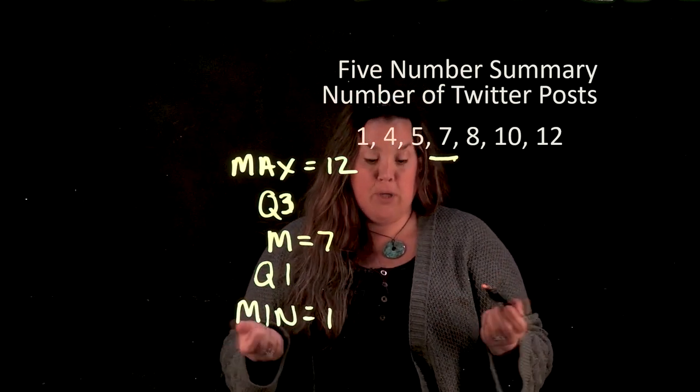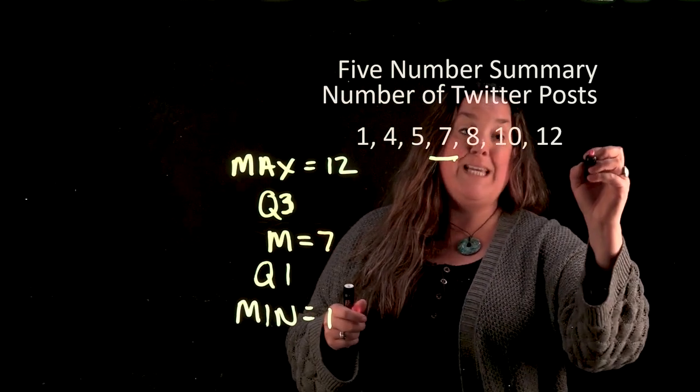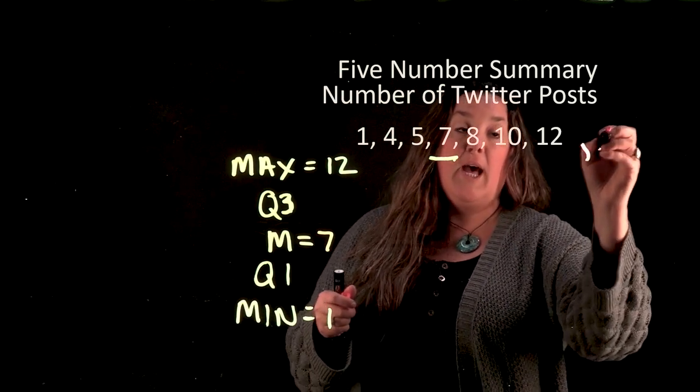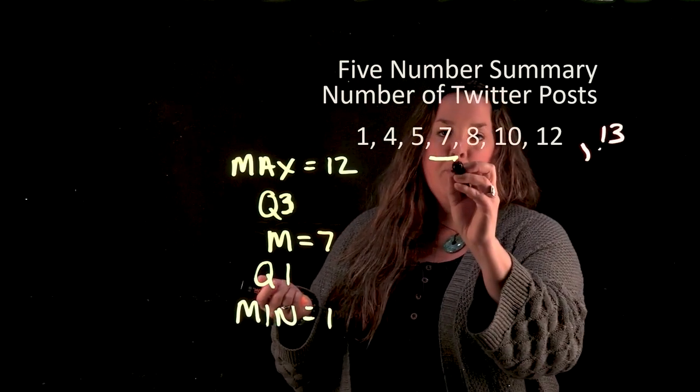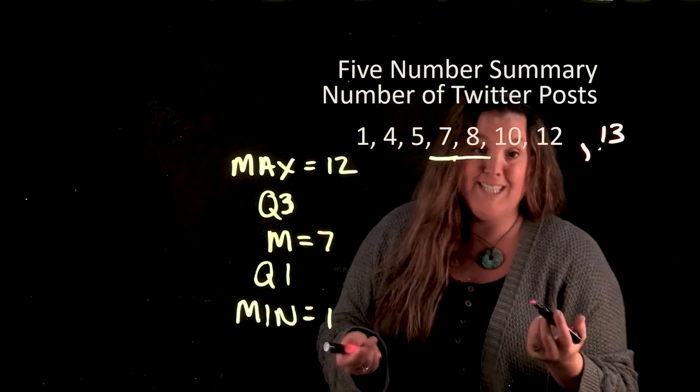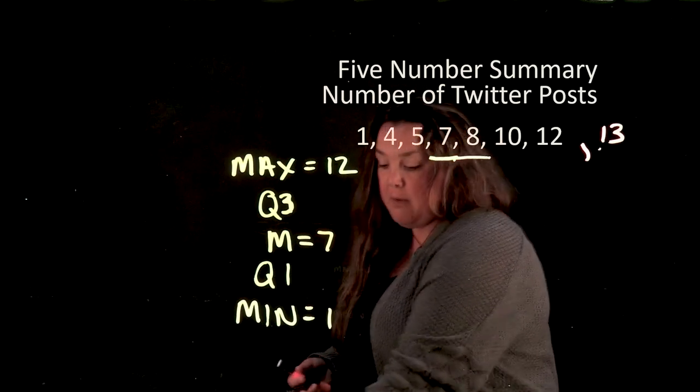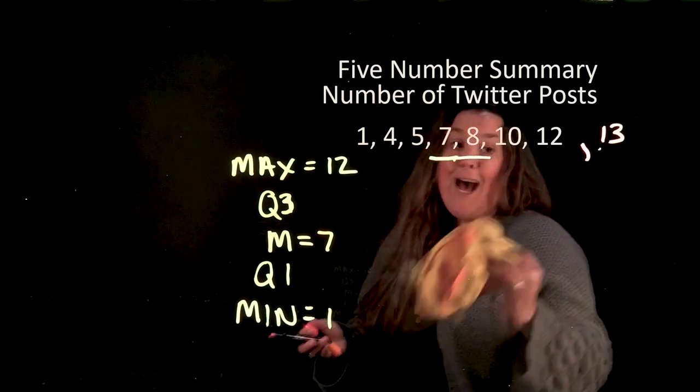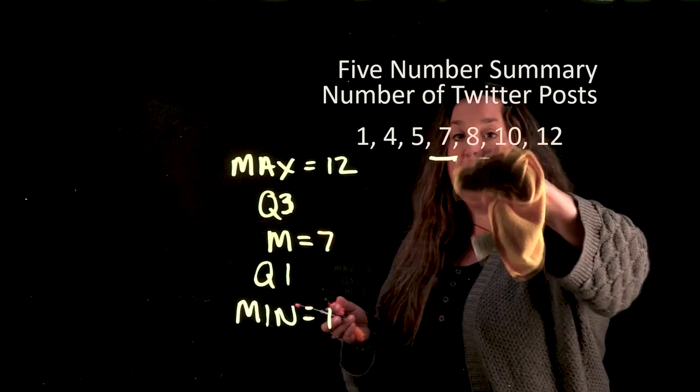Now it could be the case that you had an even number of observations. And if that's the case let's say we added 13 then your middle would actually be two numbers and you would take the average. So there it would be seven and a half because you would add the middle two observations and divide by two. But if you have an odd number of observations like we do here we're going to just take the middle observation.